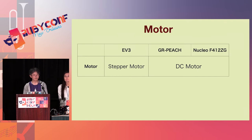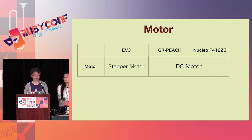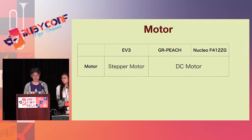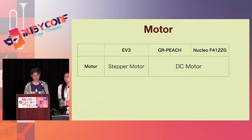Next is the motor. The EV3 motor has a built-in rotation sensor with one-degree resolution for precise control. On the other hand, GR Peach and Nucleo use a general-purpose DC motor. The speed of the DC motor can be controlled by changing the voltage. Since the functions are different, we must implement both with different APIs.